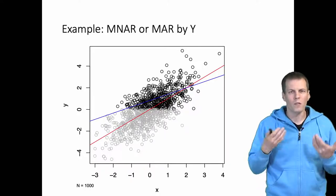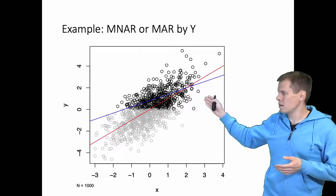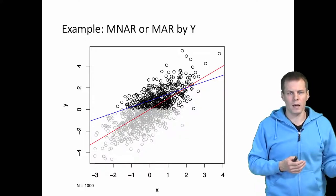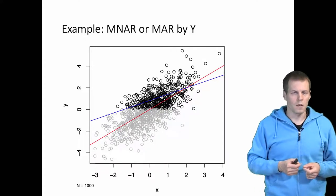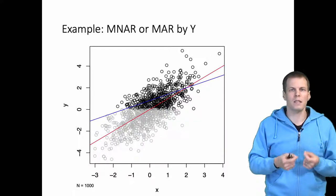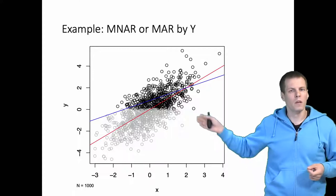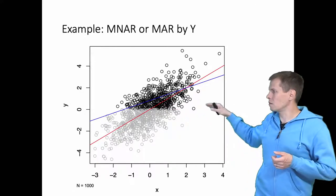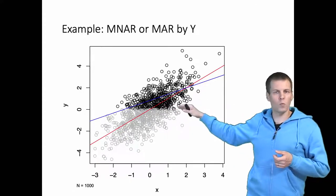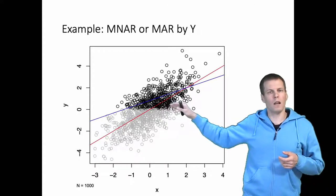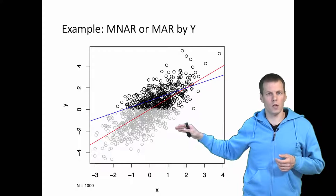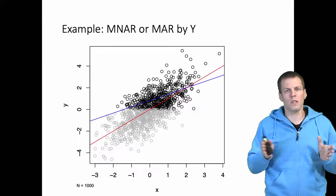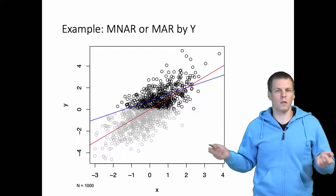Why is this the case? Basically, this missingness depends on an unobserved quantity. Y has a fitted part calculated based on x and an unobserved part — the error term. Because we have missingness that depends on an unobserved variable — the error term — we have a problem. Observations with a large negative value in the error term are more likely to be dropped, causing the error term to be correlated with x, which creates an endogeneity problem.